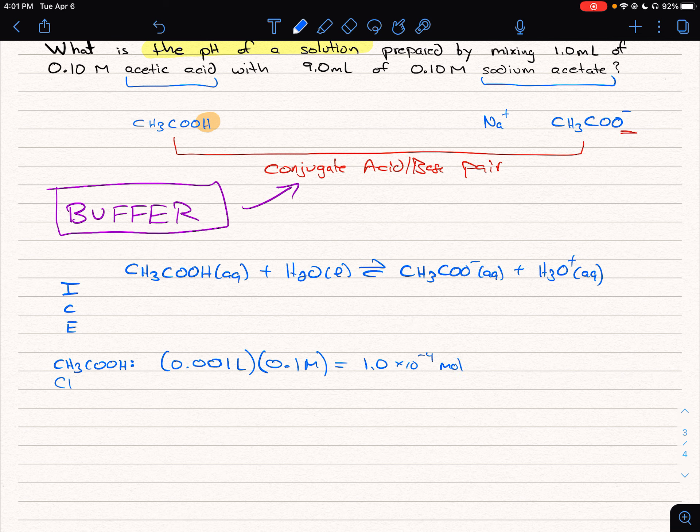And then for our sodium acetate, we're going to have 0.009 L times 0.1 M, and so we're going to get 9.0 times 10 to the negative 4th moles.